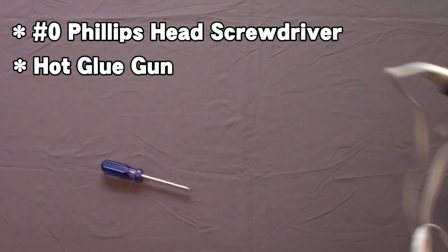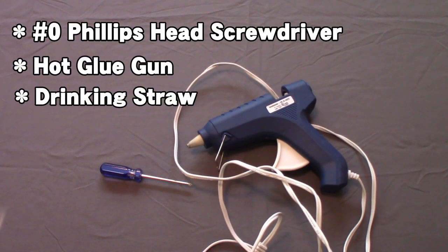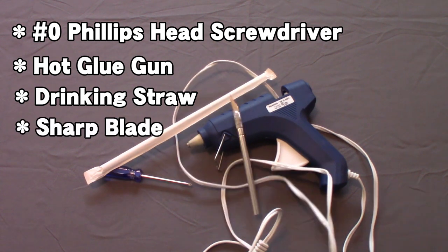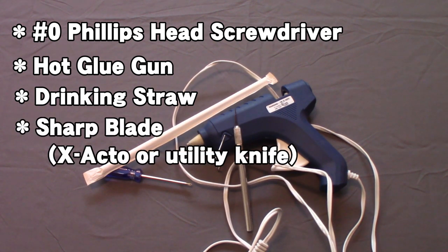Now, this is a pretty simple and easy mod. There are a few different ways you could do this, and I'm going to show you how I did mine. Here are a few tools you will need: a small Phillips-head screwdriver, a hot glue gun, a drinking straw, and a sharp blade. An X-Acto knife or a box cutter will do.